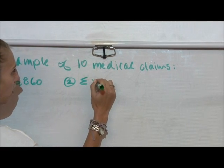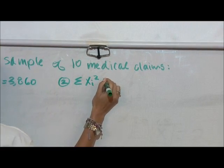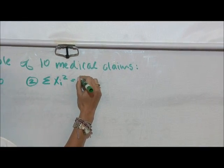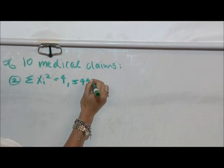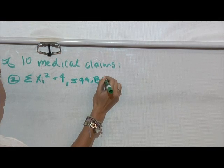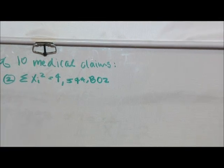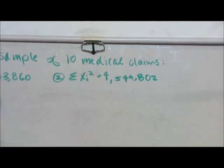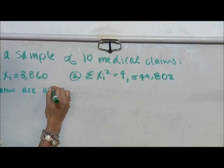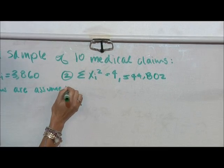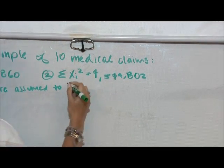The sum of all the Xi's squared equals 4,574,802. Claims are assumed to follow a log-normal distribution.